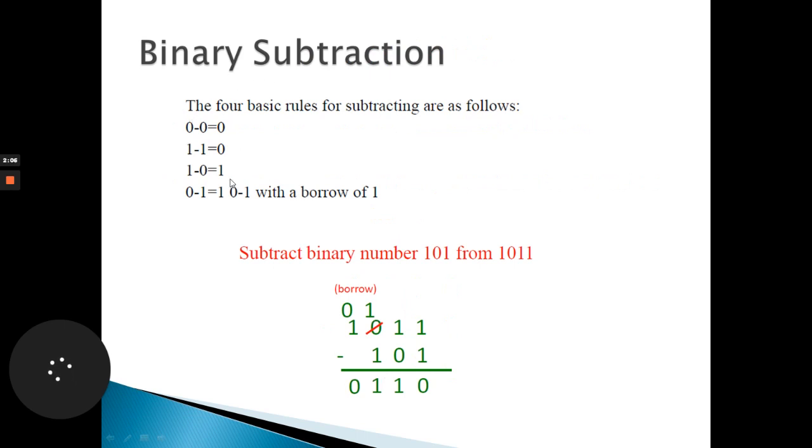Binary subtraction is as follows: 0 minus 0 is 0, 1 minus 1 is 0, 1 minus 0 equals 1, same as basic addition. But here, 0 minus 1 gives us 1 with a borrow of 1.